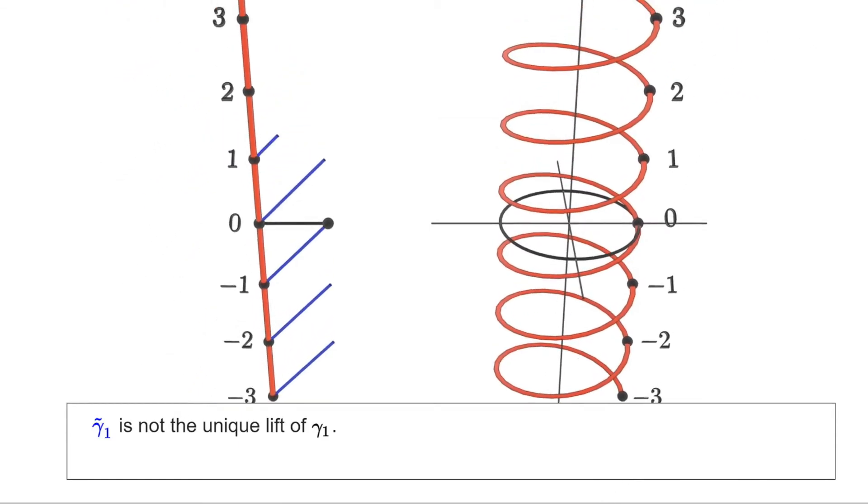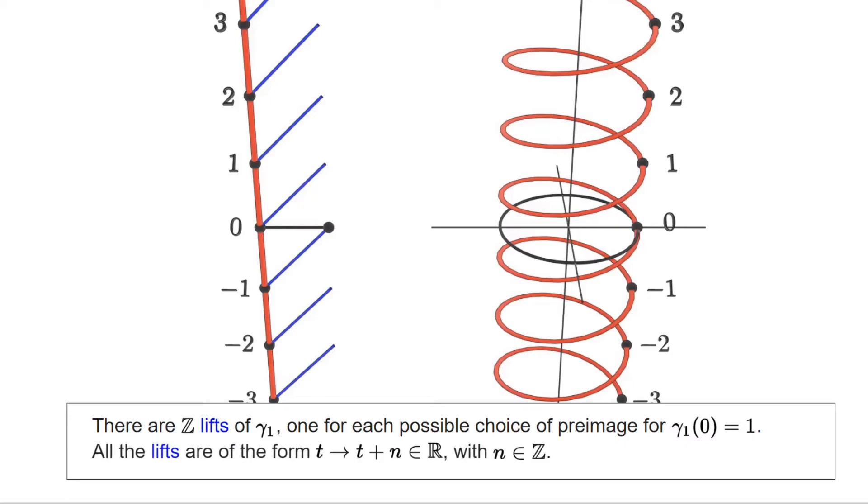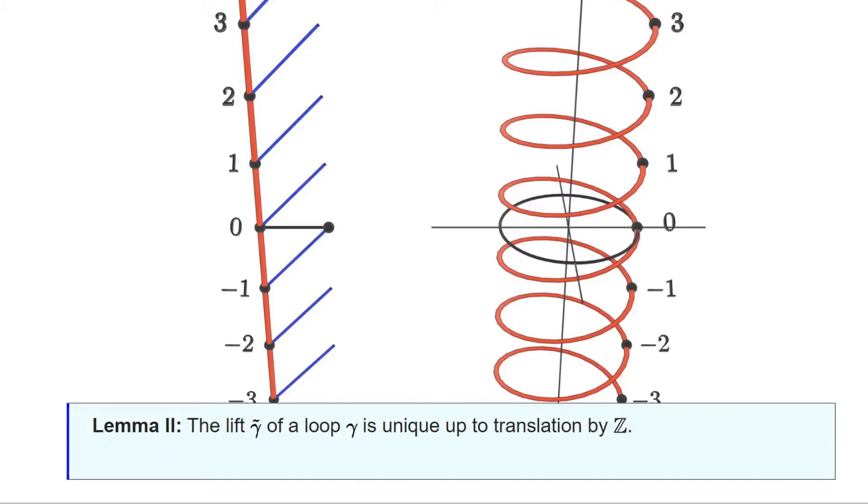A key observation is that γ₁ tilde, the lift that we've chosen, is not the unique lift of γ₁. What you should note is that the point 1 in the circle has Z many pre-images which are precisely the integers as we said. This means that when we lift the first point of γ₁, all the integers are a good choice for the first point of γ₁ tilde. However, once we've lifted this first point, γ₁ tilde is completely determined and it will be simply a straight segment of slope 1. This applies to any loop γ. All of its lifts will differ from one another by some shift by an integer. And let us emphasize again, this corresponds to the idea that every point in the circle has Z many pre-images in the real line.